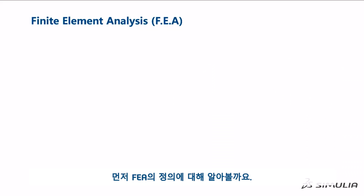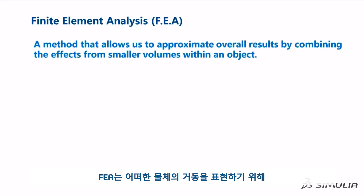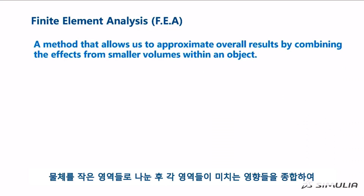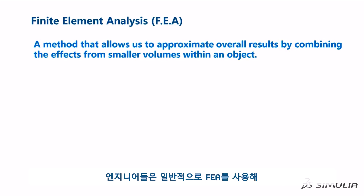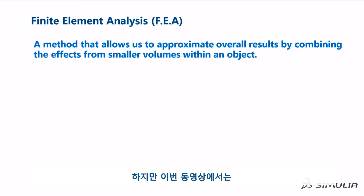First, let us define FEA. FEA is simply a method that allows us to approximate the overall result for an object by combining the effects from small volumes within the object. Engineers commonly use FEA to model complex structures and thermal systems. In this video, we will focus only on structural modeling.